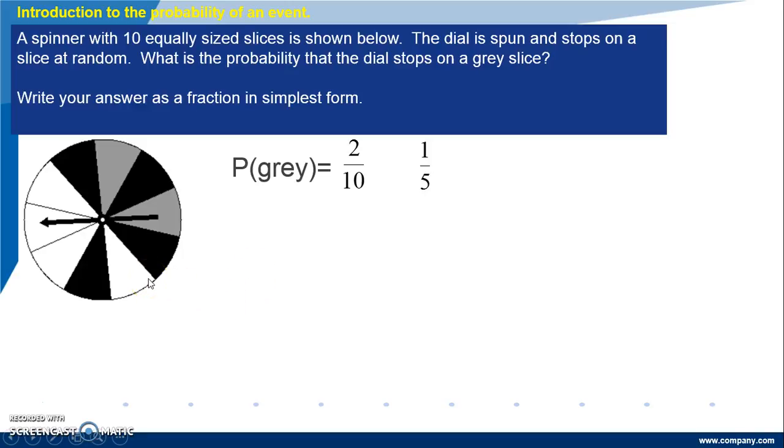What is the probability that the dial is spun and stops on a pink slice? We look at the dial, there are no pink slices, so the probability of pink is 0. It is impossible.